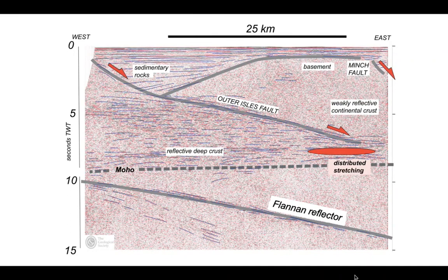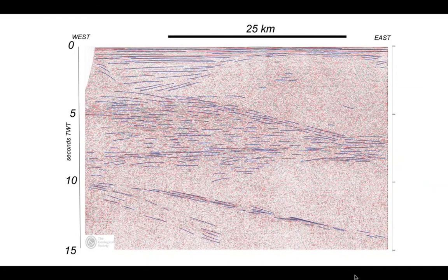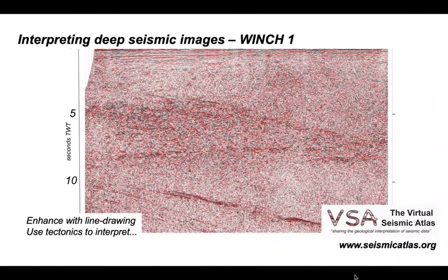So there's a strategy for interpreting this seismic profile — the WINCH 1 line from northern Scotland. We built a line drawing and used that to build our geological understanding. In building our geological interpretation, we should try to use as many tectonic ideas as we can to create a coherent geological explanation for the patterns of reflectors imaged in the subsurface. You can see this image and many others like it on the Virtual Seismic Atlas.